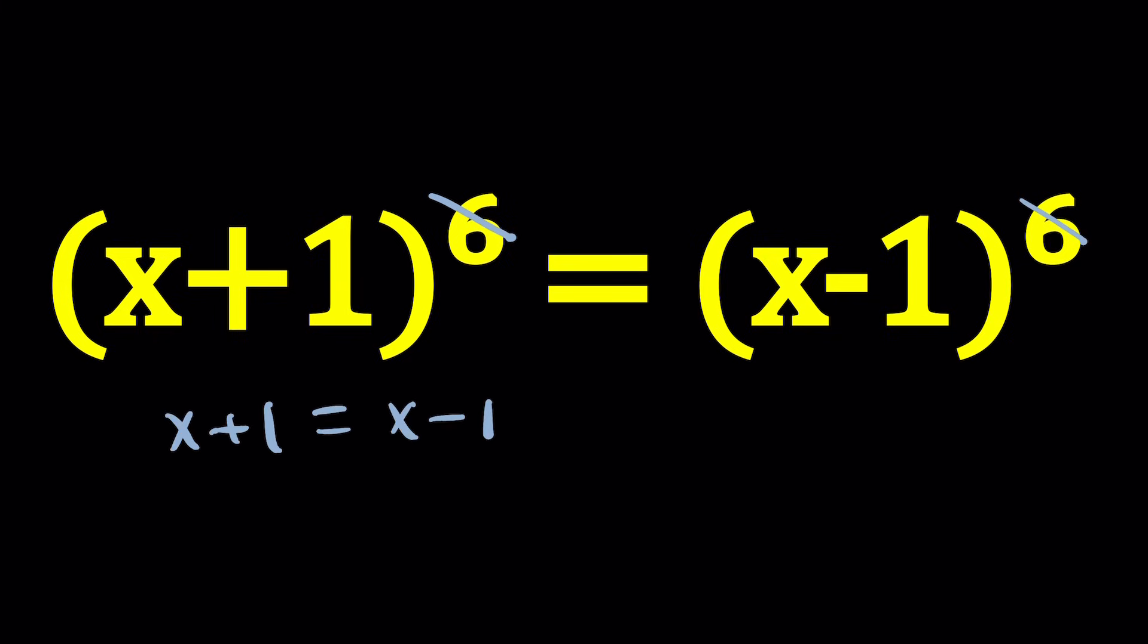And then you cancel the x's out. Don't cancel the 1's out. Damned if you do, damned if you don't. 1 equals negative 1 makes no sense at all, right? So that means there are no solutions. Nonsense. 1 does not equal negative 1, at least in the real world, in the general sense of real numbers.